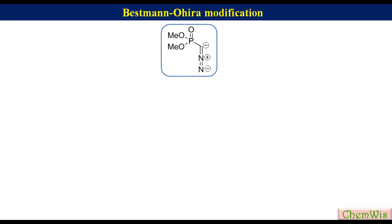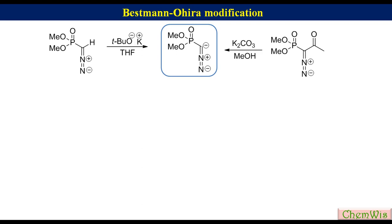In the Bestmann-Ohira modification, if we recall the mechanism of Seyferth-Gilbert homologation, the dimethyl diazomethyl phosphonate anion is generated from dimethyl diazomethyl phosphonate after proton abstraction by a strong base. In the Bestmann-Ohira modification, the same anion is generated from dimethyl diazomethyl 2-oxopropyl phosphonate in the presence of a mild base such as potassium carbonate in methanol at room temperature.